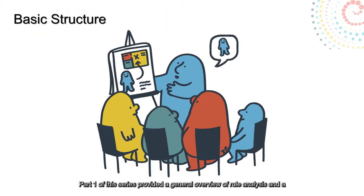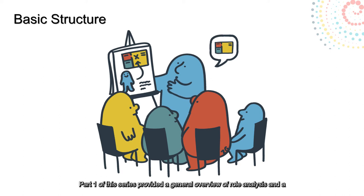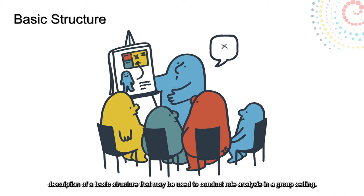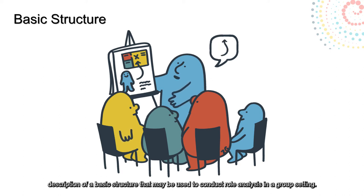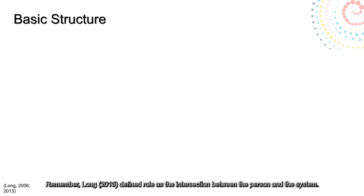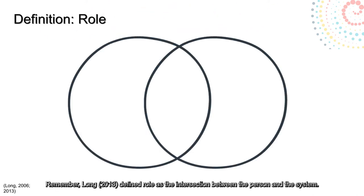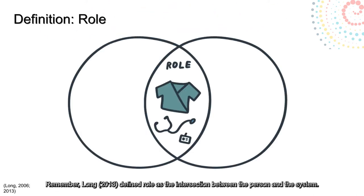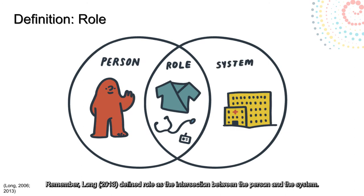Part one of this series provided a general overview of role analysis and a description of a basic structure that may be used to conduct a role analysis in a group setting. Remember, Long defined role as the intersection between the person and the system.